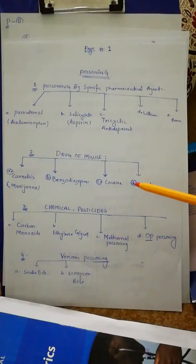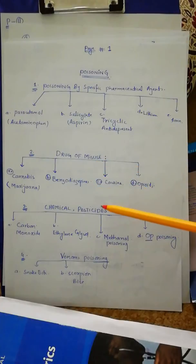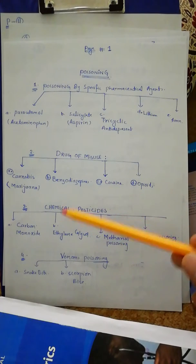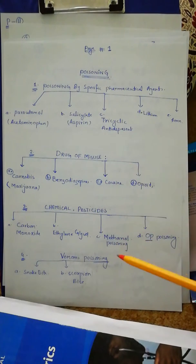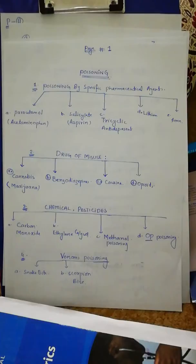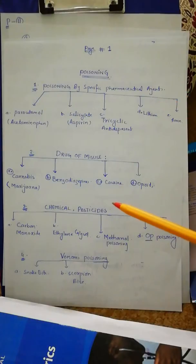The third category is chemical pesticides. In chemical pesticides, this is a more common practice for suicide attempts. This includes carbon monoxide, ethylene glycol, methanol poisoning, and organophosphorus poisoning. The fourth is venoms poisoning, such as due to snake bite or scorpion bite.